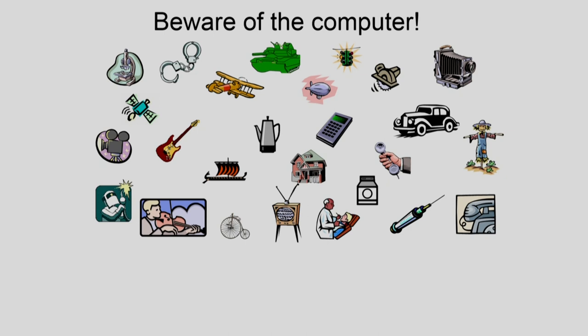A favourite question I have for students is: which of these domains does not have an embedded system in it? Typically students say the cycle or the scarecrow, which represents agriculture. But agriculture is an area increasingly seeing the advent of robotics, especially abroad.